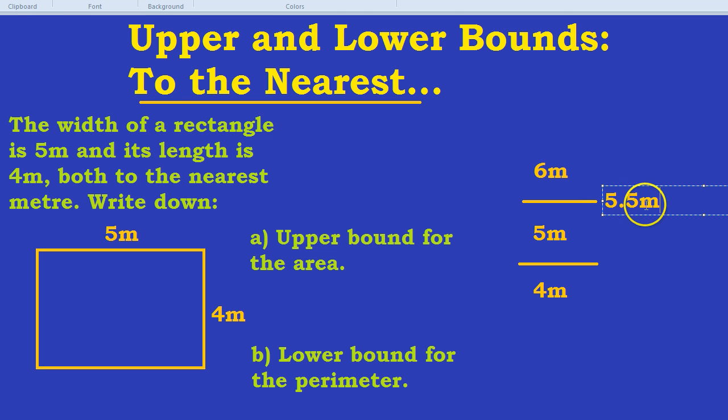Now, some students say to me, well, 5.5 metres would actually round to 6 metres, so surely we can't use that for our upper bound. How about something like 5.49? Well, 5.49 could still go even higher. OK, it'd be 5.499999999, which essentially is the same as 5.5.